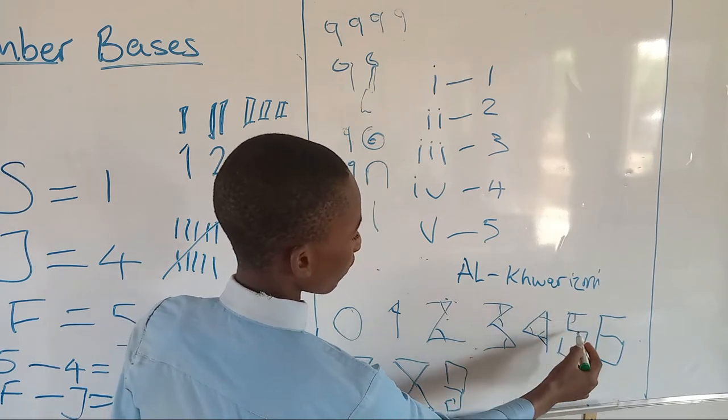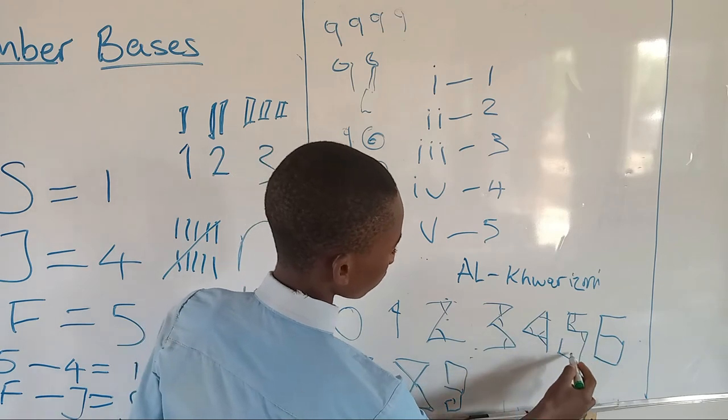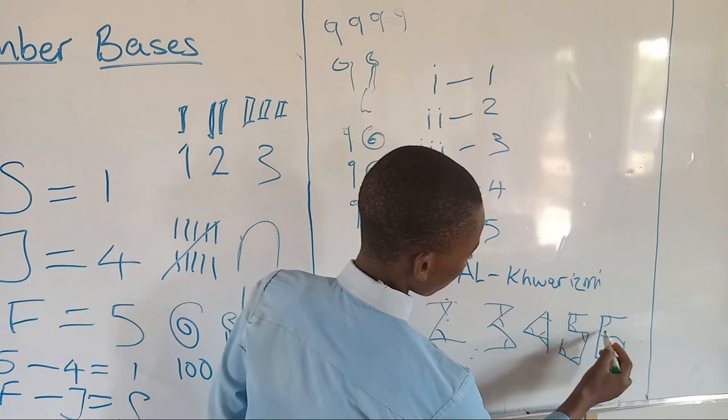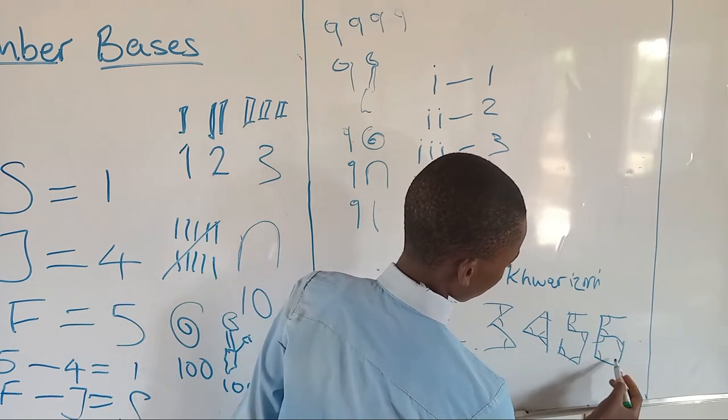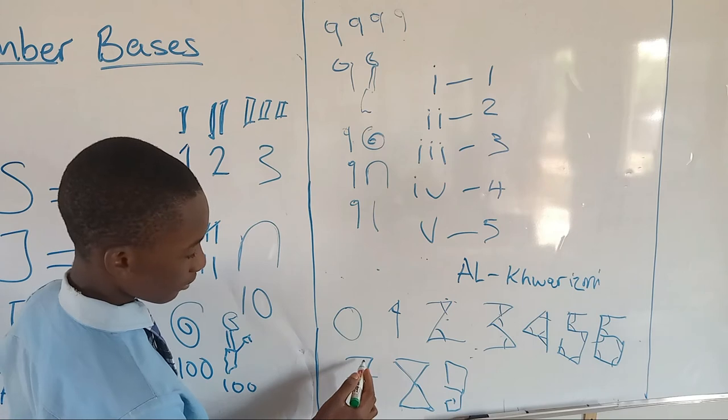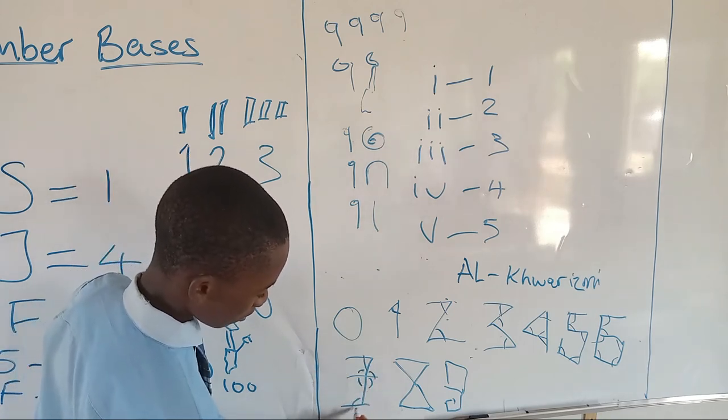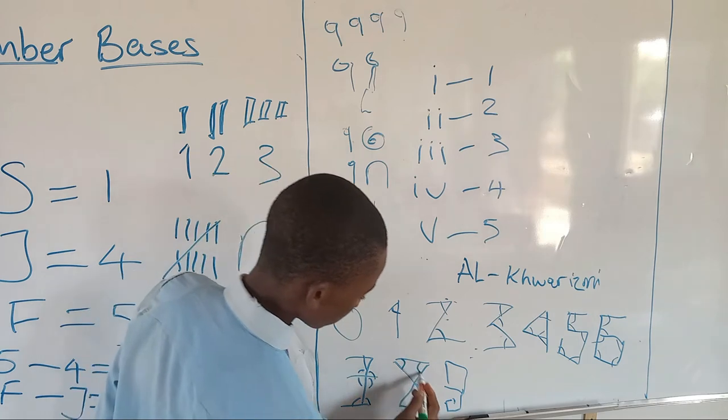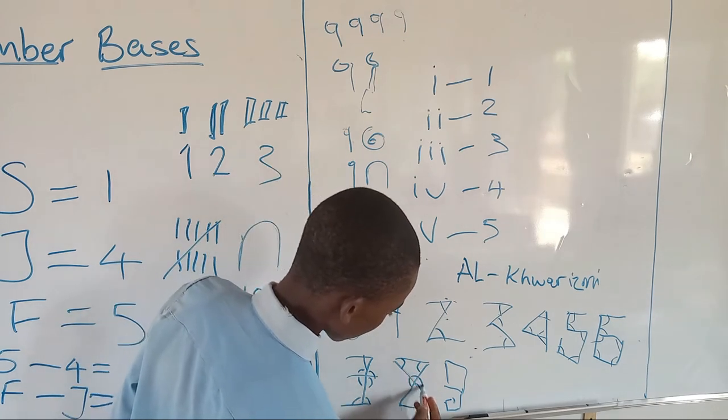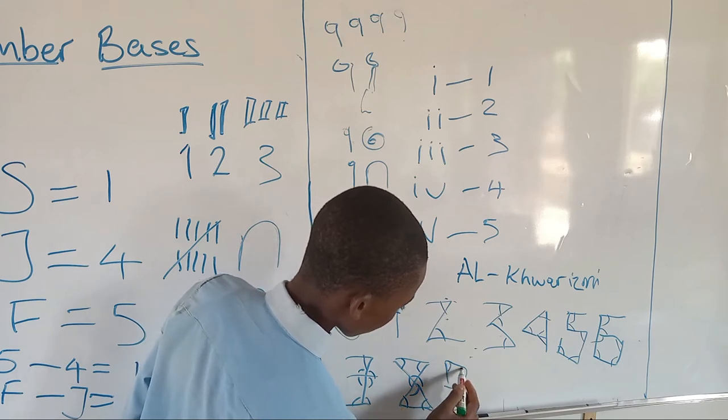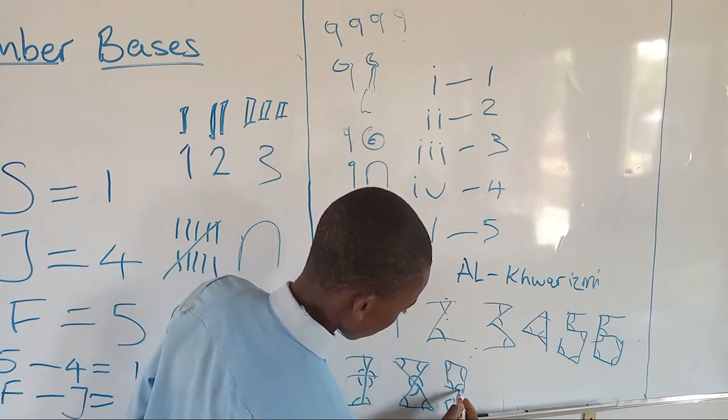Six has six angles, seven has seven angles, eight has eight angles, and then nine has nine angles.